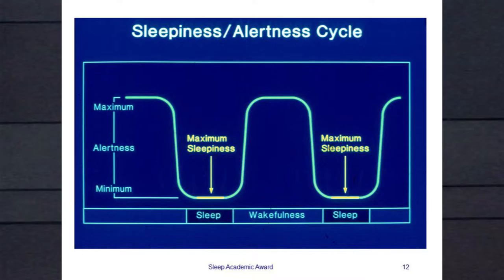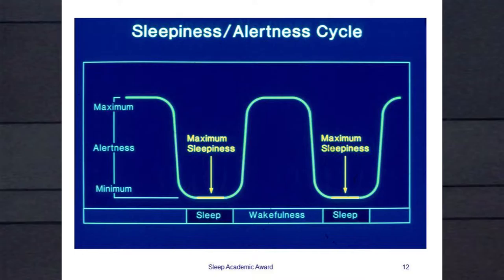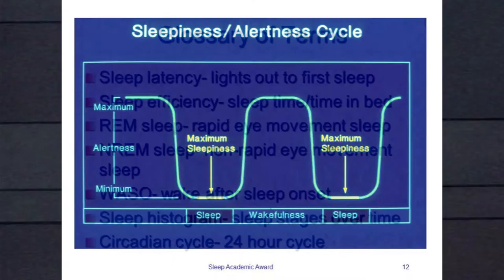This cycle can be changed — you all know this from jet travel. What resets it is bright light in the morning. Here's what it looks like over a 48-hour cycle: during the late morning you're maximally alert, and in the middle of the night, around 2 to 3 AM, you're maximally sleepy.